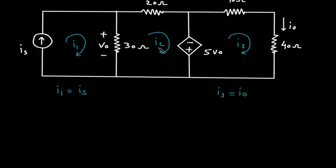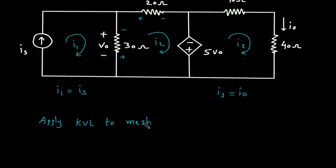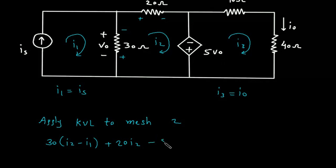We will apply KVL to mesh number 2. This will be positive, this will be negative according to the direction of this current. This will be positive and this will be negative. Starting from here, this will be 30(I2 minus I1), then plus 20I2, plus 20I2.